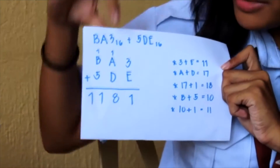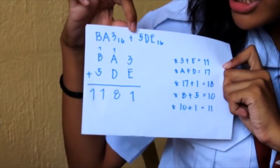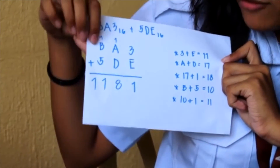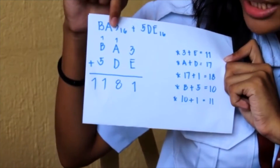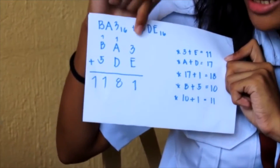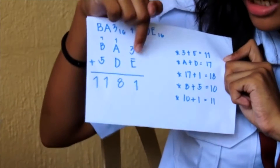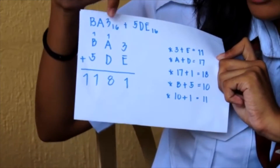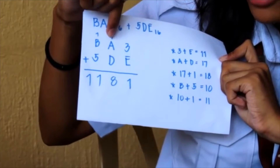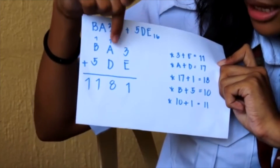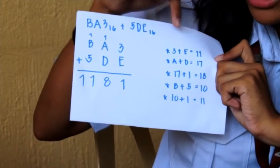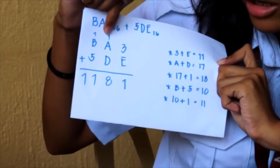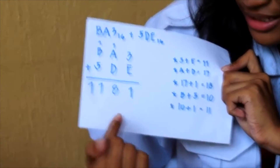So in adding hexadecimal numbers, for example, BA3 plus 5DE base 16. First, you align the digits and then proceed by adding 3 and E, which results in 11. You carry the 1 over, then proceed to add A and D, resulting in 17, plus the carry gives 18.